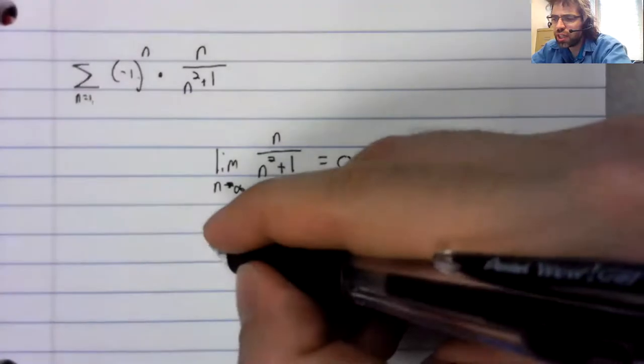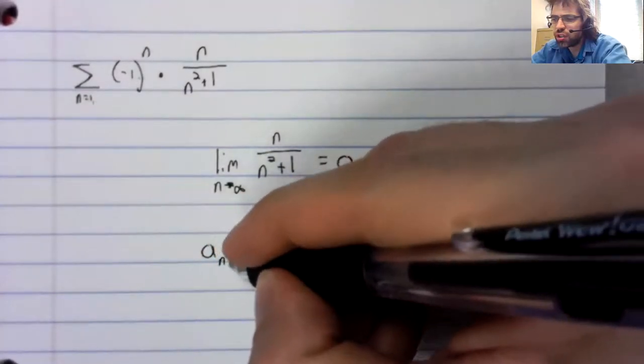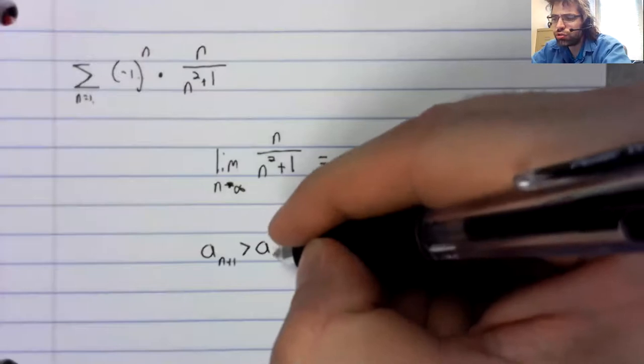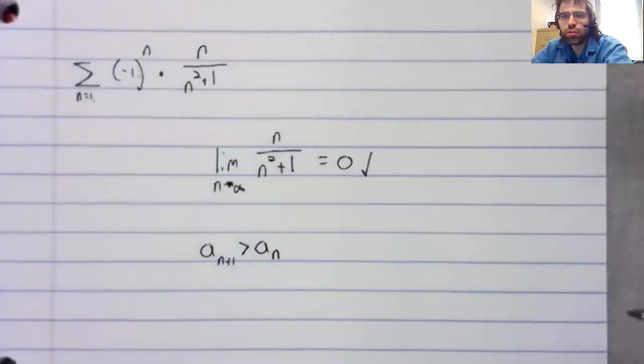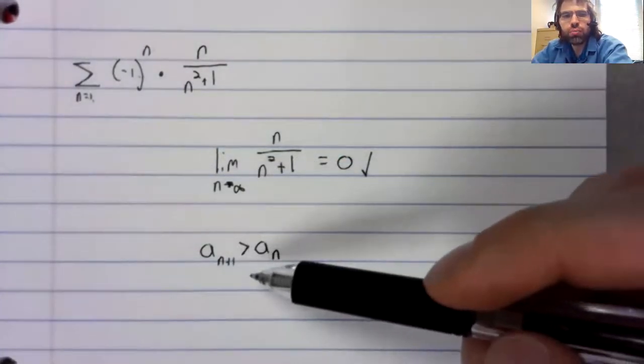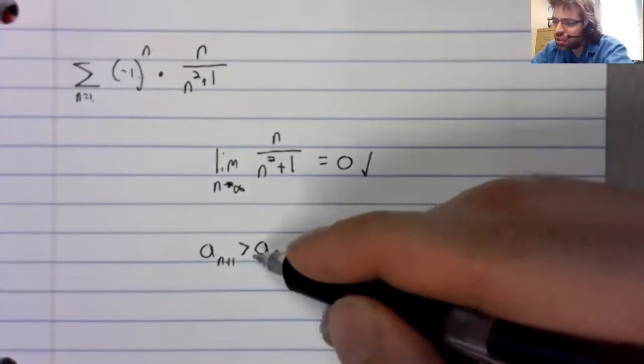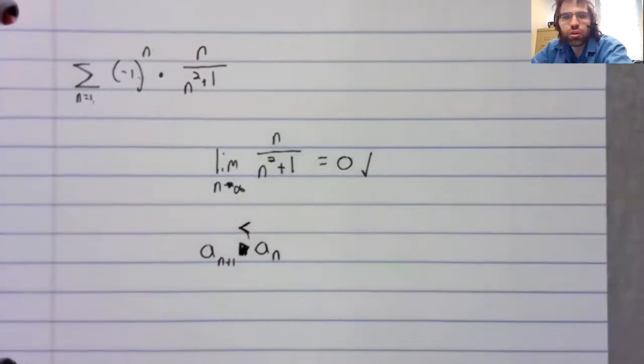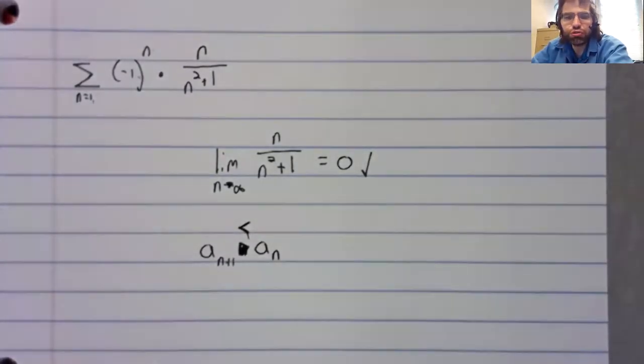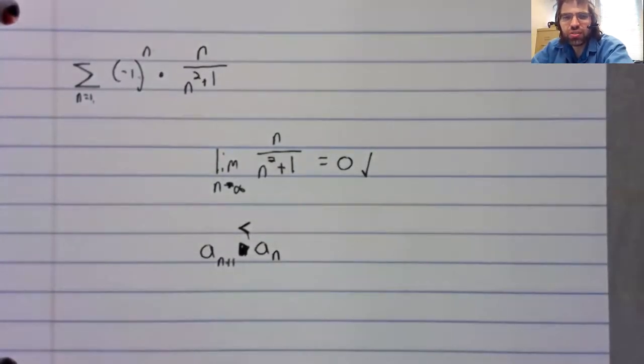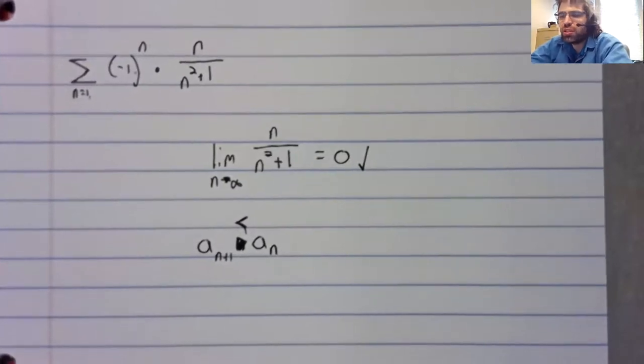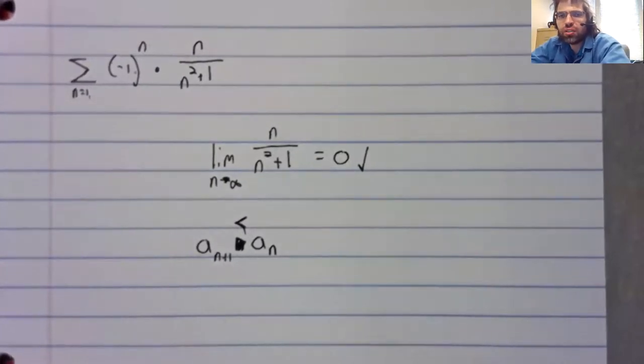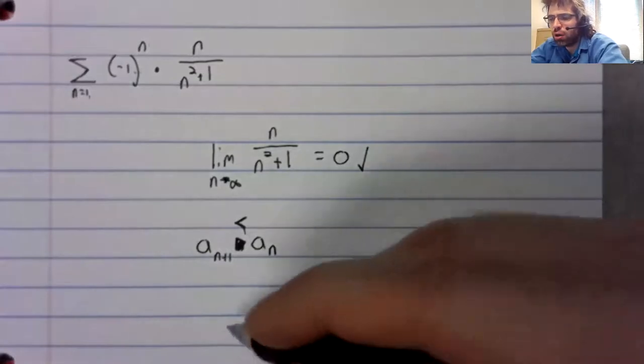The second condition is less trivial to show. These terms need to be decreasing. So the second term needs to be smaller than the first term, the third term needs to be smaller than the second term, and so on.